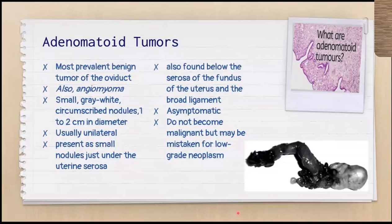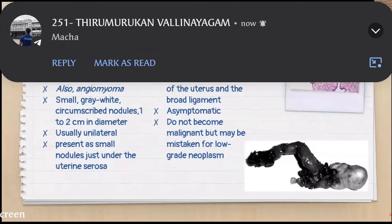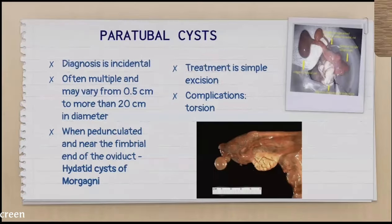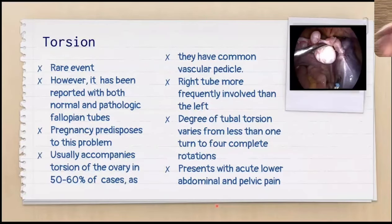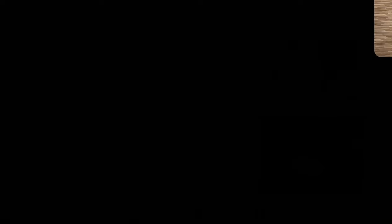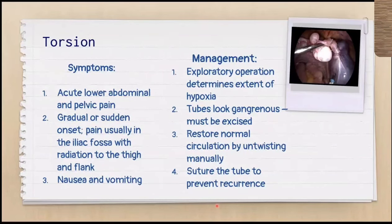For the fallopian tubes, adenomatoid tumors are the most prevalent benign tumor of the ovidac, also named angiomyoma. They are very small because the fallopian tube is a small organ. Paratubal cysts are also commonly reported, especially with the increased use of minimally invasive surgery. Torsion of the fallopian tube is very rare and usually comes with an ovarian cyst — together they twist around themselves.